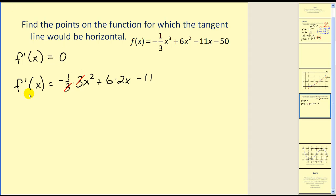Let's simplify here and set it equal to 0. Those three simplify. This would leave us with negative x squared plus 12x minus 11. Again, we want to know when this is equal to 0. That's where the tangent lines would be horizontal.